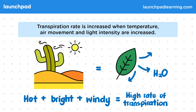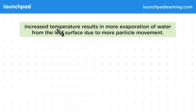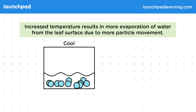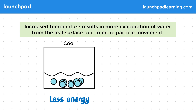What are the consequences of hot temperatures? Increased temperature results in more evaporation of water from the leaf surface due to more particle movement. In this diagram, you can see particles that are cool. When particles are cool, they have less energy and so they don't move around that much.